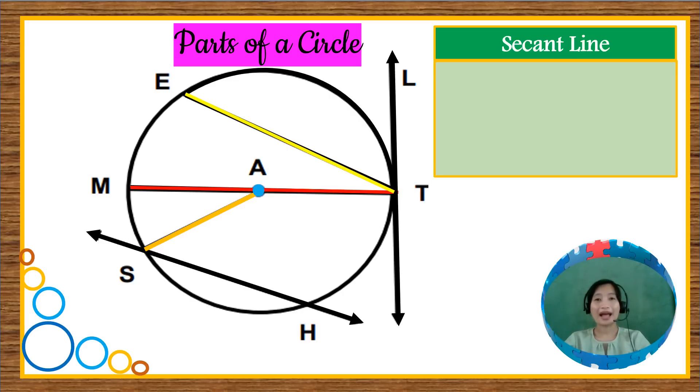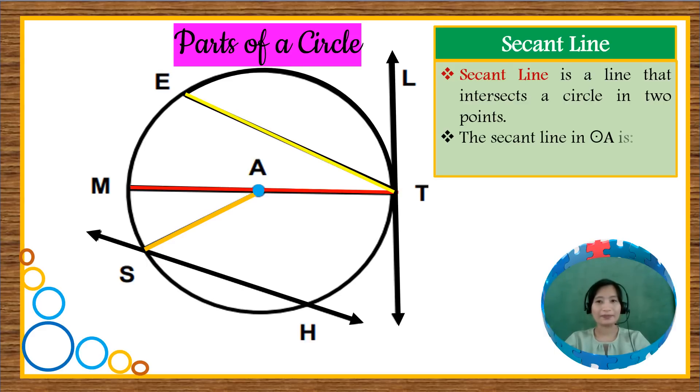We also have the secant line, which is a line that intersects a circle in two points. The secant line in circle A is line SH. The difference between a secant line and a chord is that a chord has two endpoints while a secant line is a line and it has two arrowheads. It means that it can be extended on both sides.